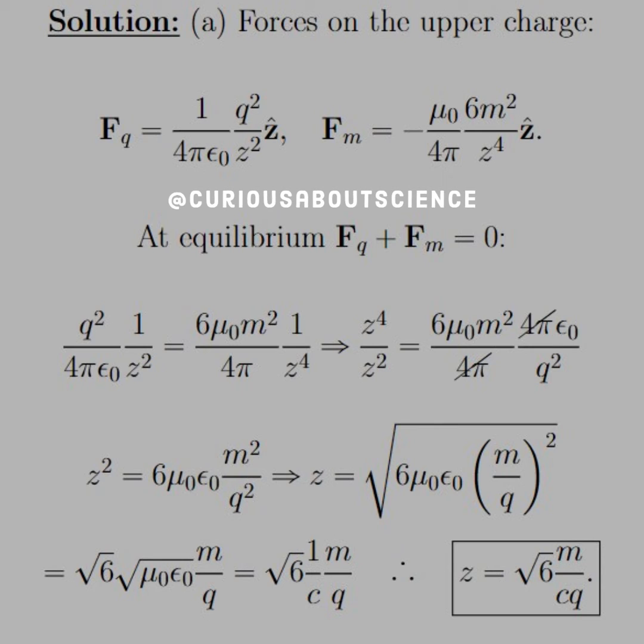and then when you take the square root for z, to isolate z, you see you have root 6, and then times root mu naught epsilon naught times the ratio of M to Q. But if you recall, we know that 1 over mu naught epsilon naught is equal to C, so we just put a C in the denominator there.